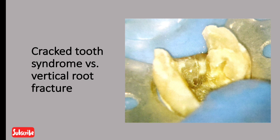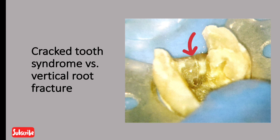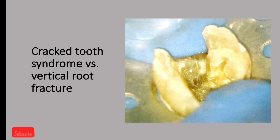To differentiate Cracked Tooth Syndrome from vertical root fracture, study the image shown. In Cracked Tooth Syndrome, the crack line extends in an occlusal-to-cervical direction.